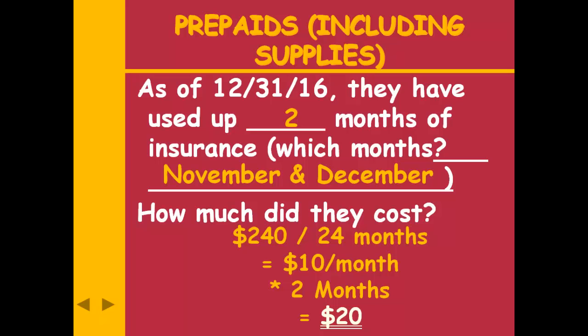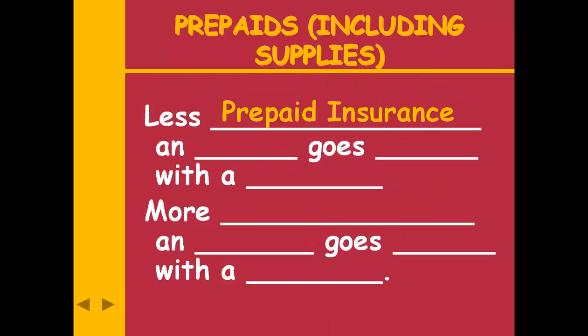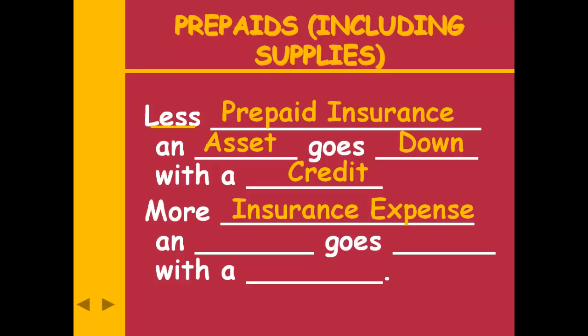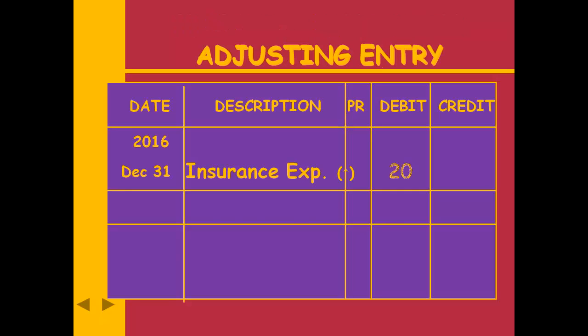I have less prepaid insurance — prepaid insurance is an asset going down, so credit it. When I use up prepaid insurance, it becomes an expense, so I have more insurance expense going up with a debit. My adjusting entry: debit insurance expense, credit prepaid insurance for $20. Debits are always listed first in the journal. The amount is for the two months I have used up.